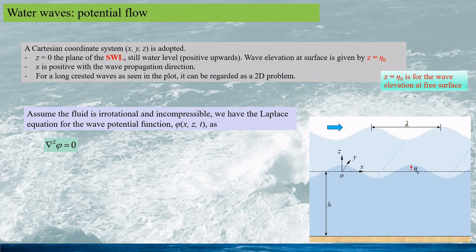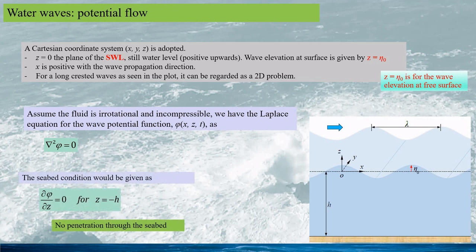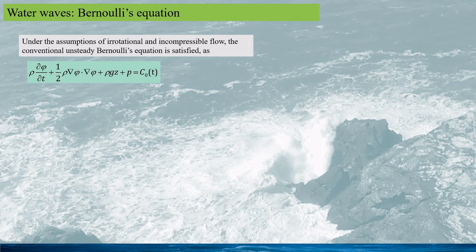Thus the velocity potential function satisfies the Laplace equation. In this talk, we will see how the potential function is solved from the Laplace equation and the corresponding boundary conditions. The seabed condition is given as a non-penetration condition, meaning the fluid cannot penetrate into the seabed. Under the assumptions of irrotational and incompressible flow, the conventional Bernoulli's equation must be satisfied with a time-dependent constant C0, which must be chosen carefully for different applications.